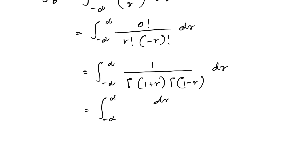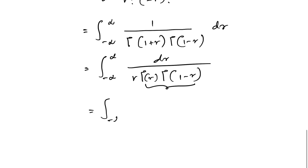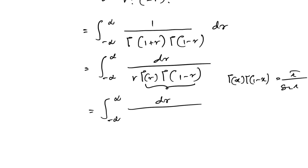So we have the integral from minus infinity to infinity of dr over Gamma(r+1) times Gamma(1-r). Since Gamma(r+1) = r·Gamma(r), we get dr over r·Gamma(r)·Gamma(1-r). Applying Euler's reflection formula, Gamma(x)·Gamma(1-x) = pi/sin(pi·x), the denominator becomes r·pi/sin(pi·r).